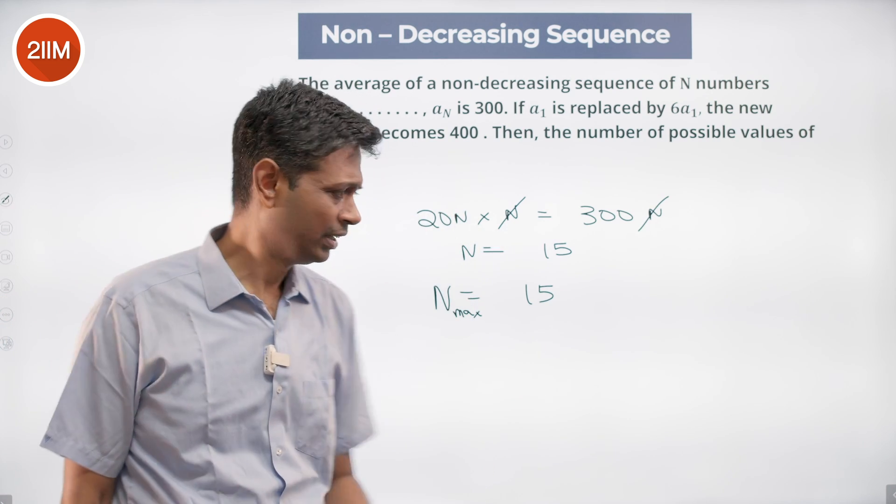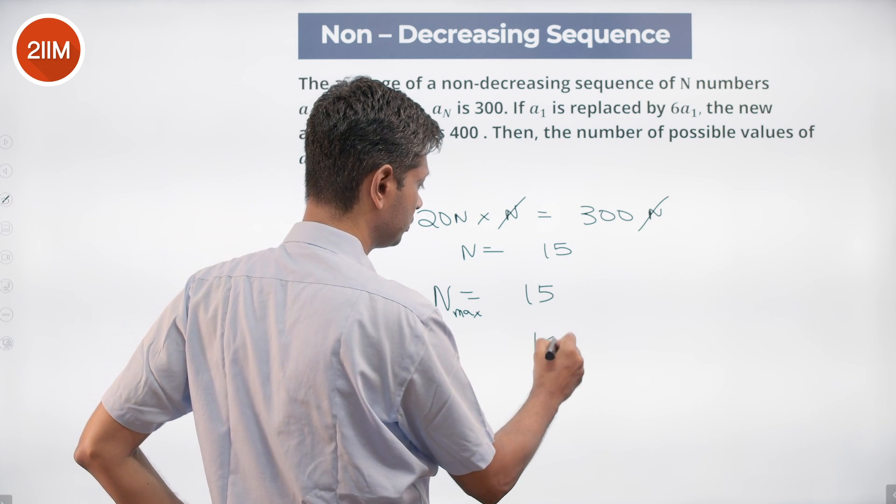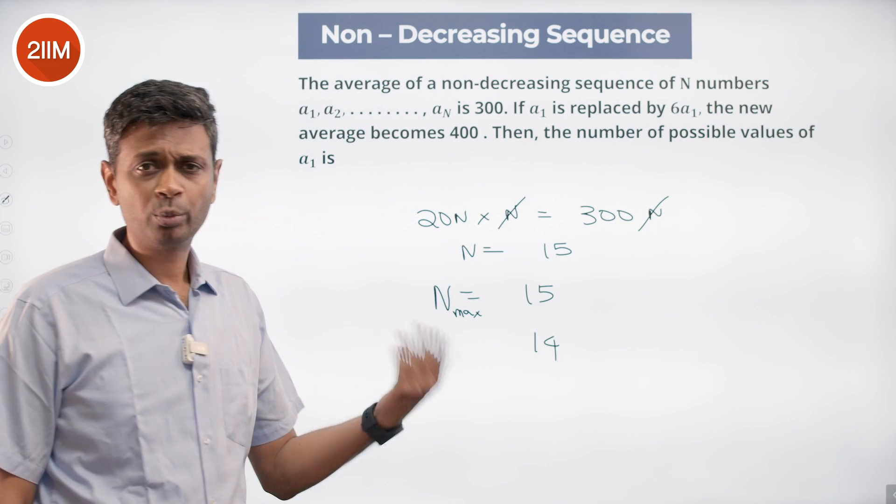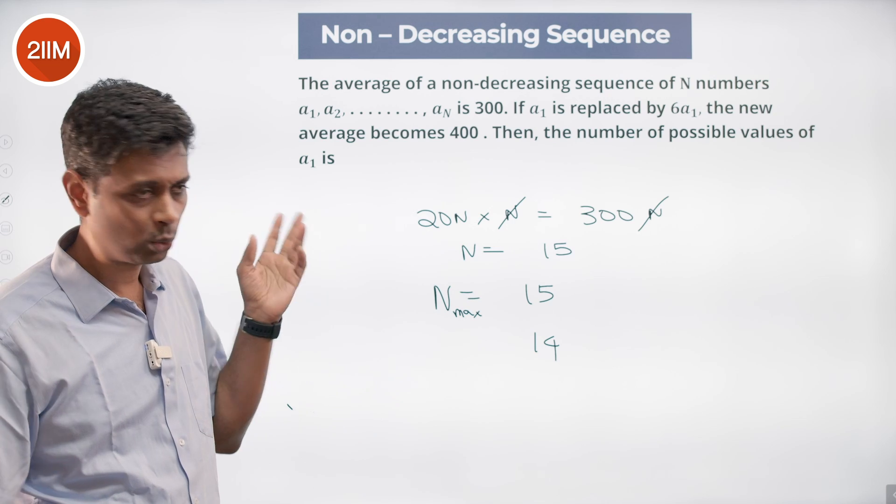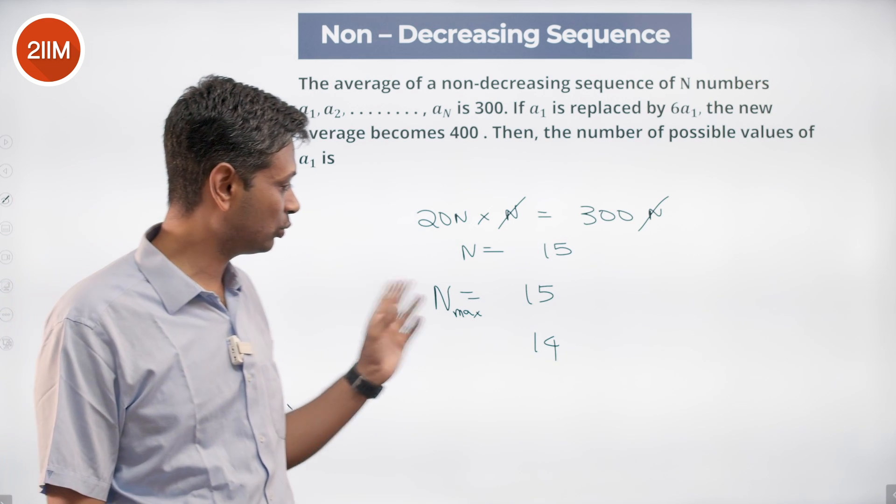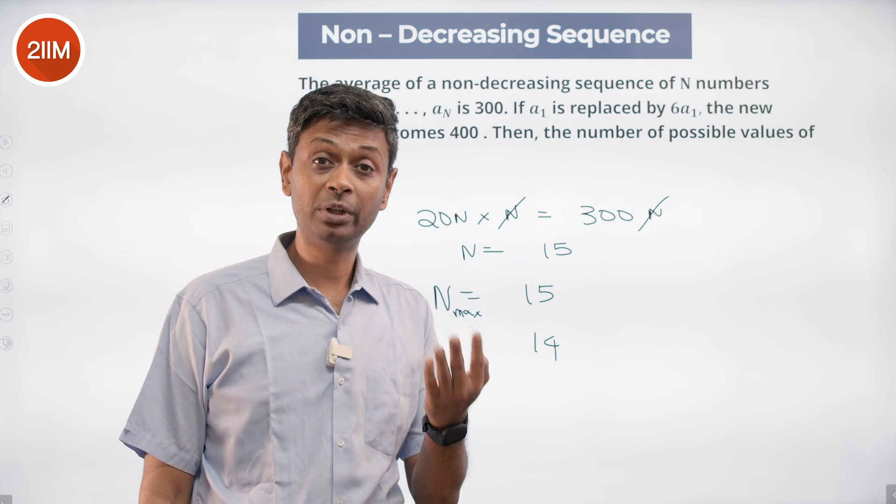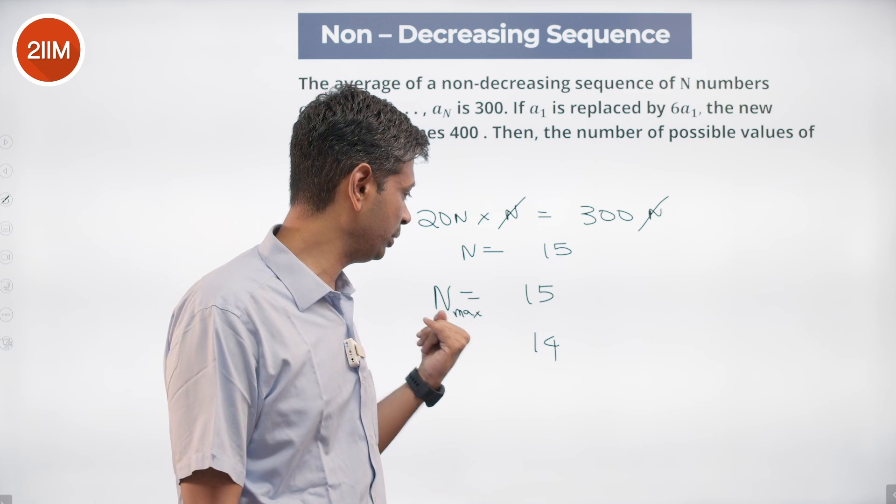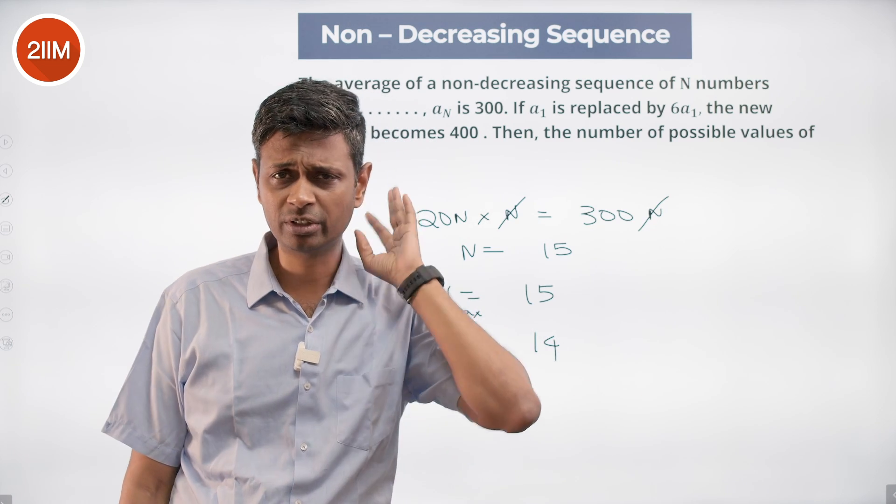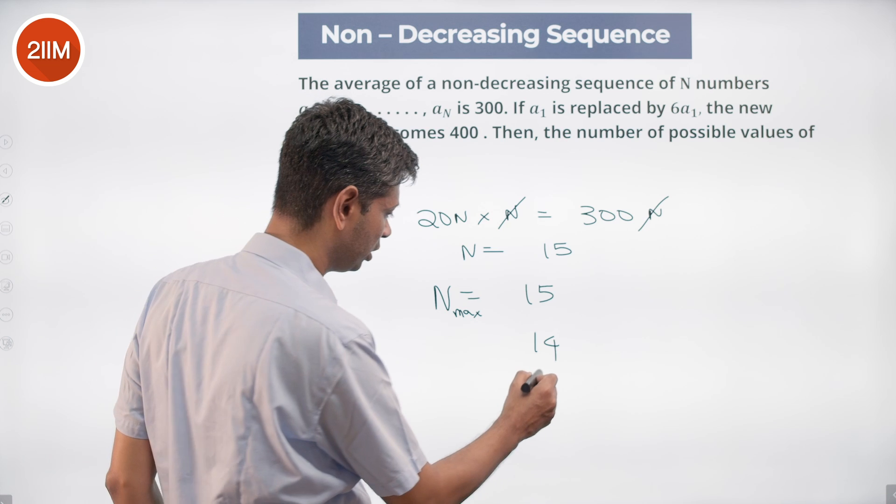N is 15. This is the maximum value N can take. N = 15, we can find a₁. a₁ is 15 × N. Can N be 14? Yeah, N can be 14. a₁ would be 280 (14 × 20 = 280). Adding the first 14 terms, the average would be 300. The sum would be 300 × 14. We can find different combinations; it will work.